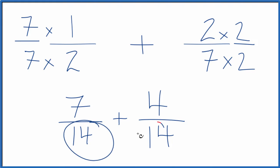And we have the same denominator, so we're just going to add the numerators together. 7 plus 4 equals 11. And then when we add fractions, since we have the same denominator, we just keep that the same.